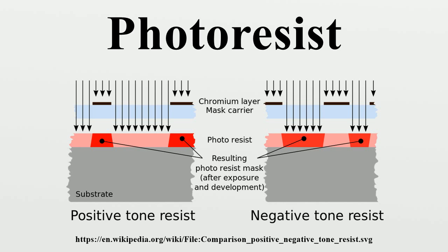Photoresist categories: The main properties characterizing the photoresist types are tone. Photoresists are classified into two groups: positive resists and negative resists. A positive resist is the type of photoresist in which the portion of the photoresist that is exposed to light becomes soluble to the photoresist developer.